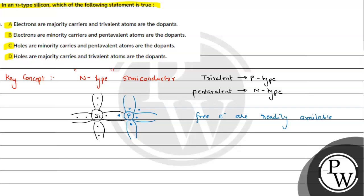As we increase the impurity, free electrons keep increasing and conductivity also increases. From doping, free electrons are readily available. Additionally, due to thermal agitation — because of temperature — some silicon bonds also break, giving us more free electron-hole pairs. So due to thermal agitation, holes are also created when electrons leave their positions.